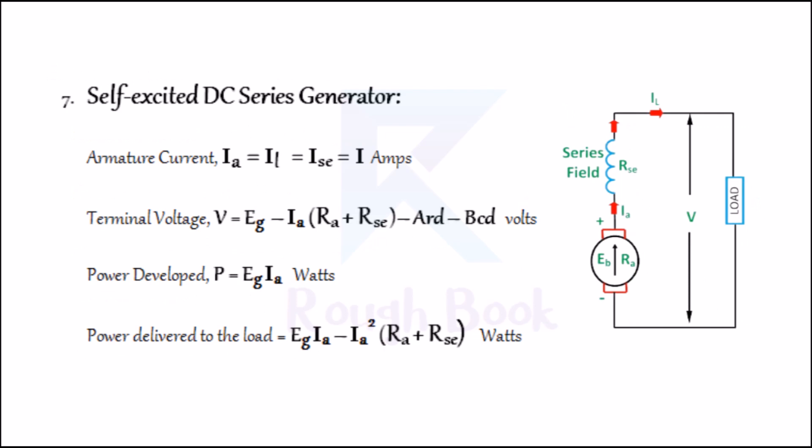Number seven: Self-excited DC series generator. In this generator, the field winding is connected in series with the armature conductors. Armature current IA = IL = ISE = I, where ISE is the current through the series field winding. Terminal voltage V = EG − I(RA + RSE) − armature reaction drop − brush contact resistance drop in volts. Power developed P = EG × IA in watts. Power delivered to the load = EG × IA − I²(RA + RSE).